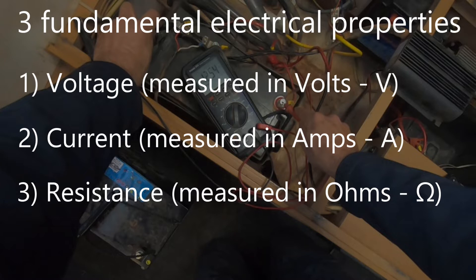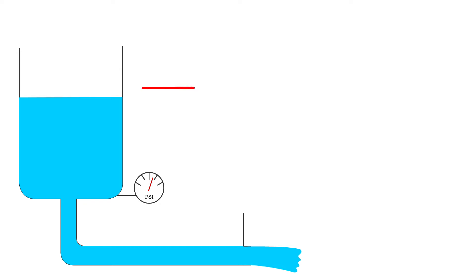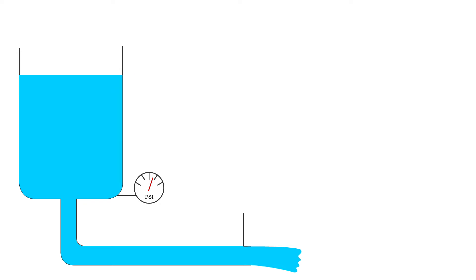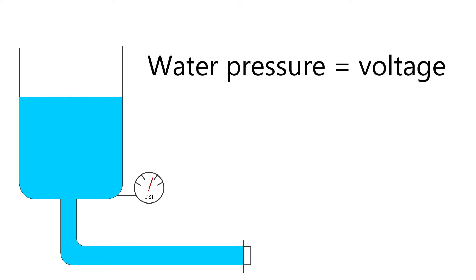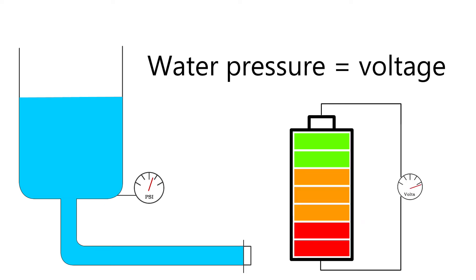The easiest way to understand them is to picture a tank of water with a pipe coming out the bottom. As you increase the water level in the tank, you increase the water pressure, which pushes the water out faster. Water pressure is just like voltage — it's simply measuring the difference in electrical charge between two points in a circuit, or in simpler terms, how hard the electricity is trying to get from the positive to the negative.